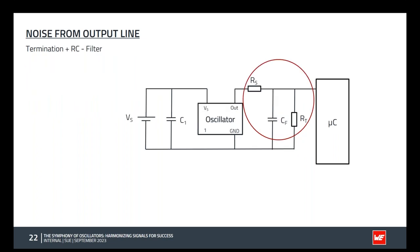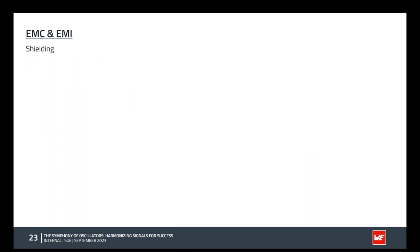A special case: when using an RC filter together with a termination resistor, both resistors form a voltage divider. You must ensure that Rs is much smaller than Rt — roughly 100 to 1000 times smaller — to prevent excessive voltage loss and ensure the signal is still good enough for the microcontroller.